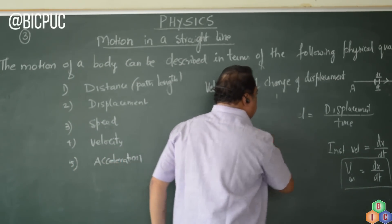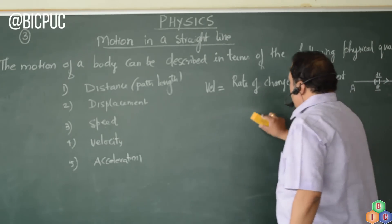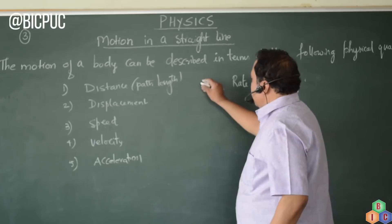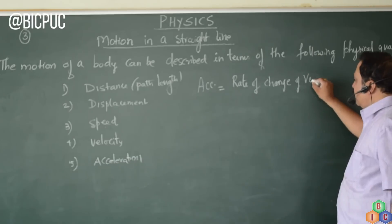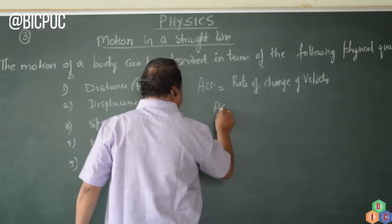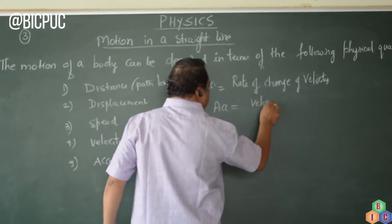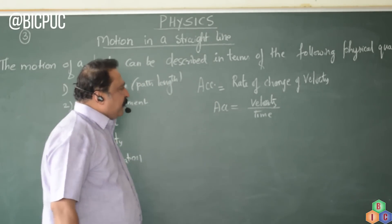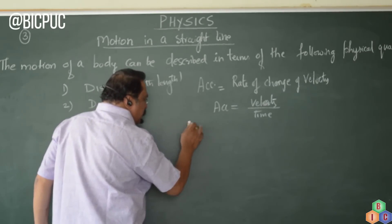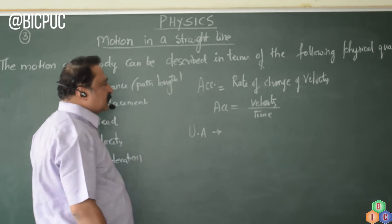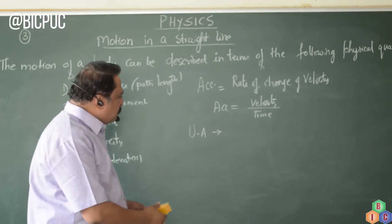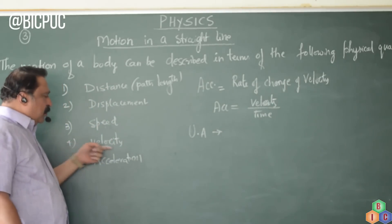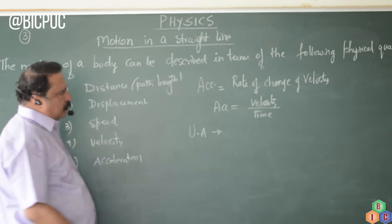The last parameter required to describe motion is acceleration. Acceleration is defined as the rate of change of velocity. Similar to speed and velocity, acceleration also has types: uniform acceleration, non-uniform acceleration, and instantaneous acceleration.